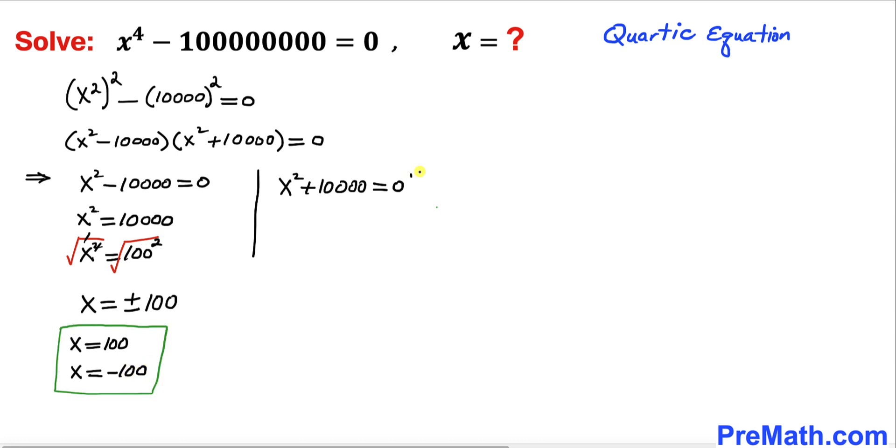Now let's focus on the second equation. Let's move this 10,000 to the other side, so we're going to have x^2 = -10,000. Once again, 10,000 could be written as 100^2, so I can write x^2 = -(100)^2.